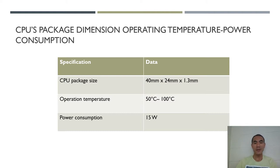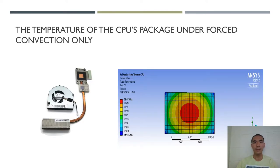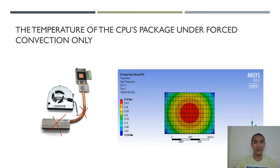The operation temperature is maintained at about 50 to 100 degrees Celsius. The power consumption of the CPU is about 15 watts. By running the simulation in ANSYS Workbench using convection only — removing the heat pipe and heat sink — the final temperature of the CPU comes out to 52 degrees Celsius, which is very close to the target operation temperature of 50.